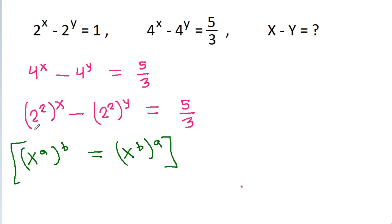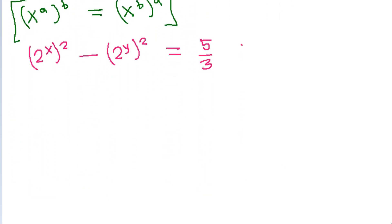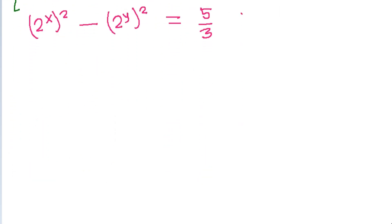So, 2 square power x will be equal to 2 power x square, minus 2 square power y will be equal to 2 power y square, that is equal to 5 by 3. And a square minus b square is equal to a plus b times a minus b.